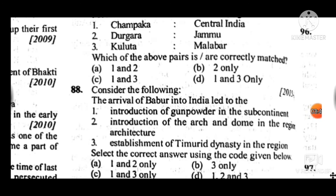Question 88: Consider the following — the arrival of Babur into India led to which of the following? Answer to question 88 is B: only option 3 is correct — establishment of the Timurid dynasty in the region. The rest of the options are incorrect.